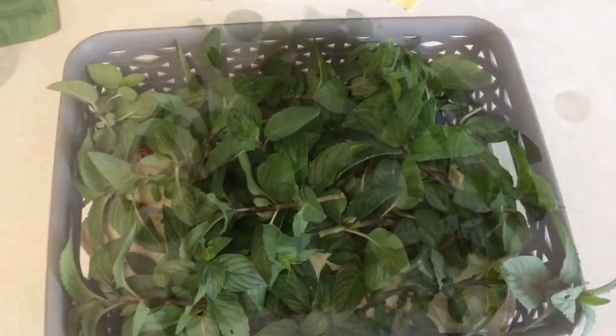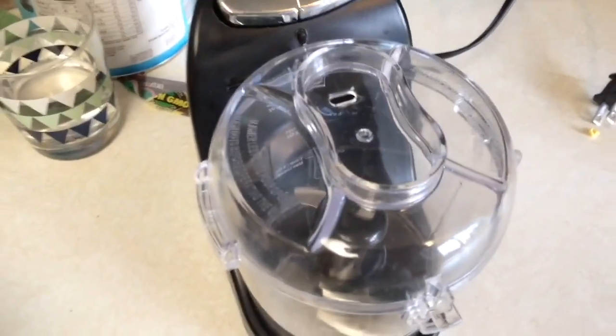We'll start by cutting it up. I've just taken all the leaves off of the stems. Now we're going to blend it up in this food processor, get it all cut up, and release some of those oils.